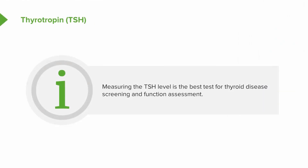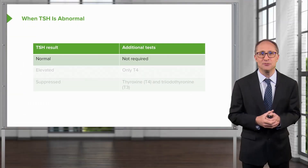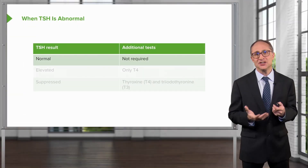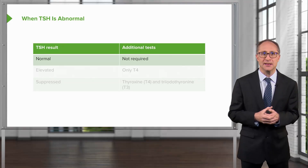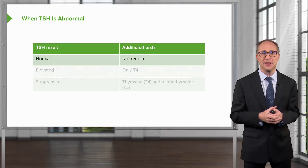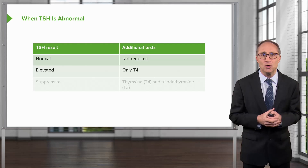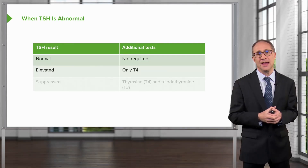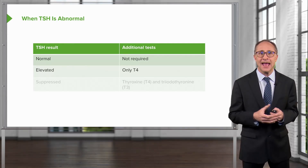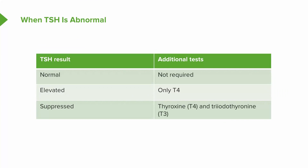Thyrotropin, or TSH, is the best single test for screening thyroid function. If the TSH is abnormal, additional evaluation of thyroid function should be considered to determine the extent of the dysfunction. Measure T4 when thyroid stimulating hormone is elevated, and measure both T4 and T3 when thyroid stimulating hormone is suppressed.